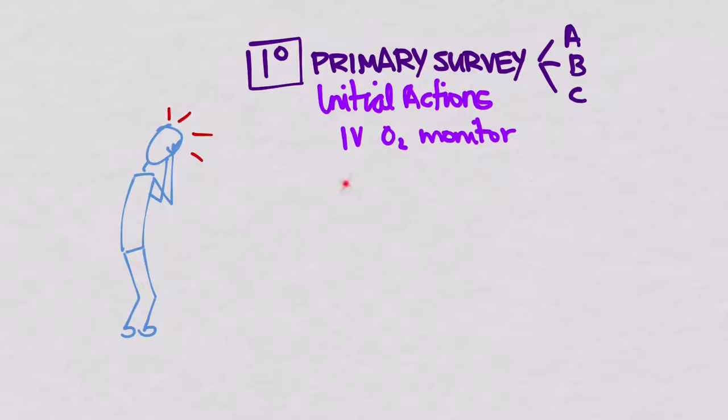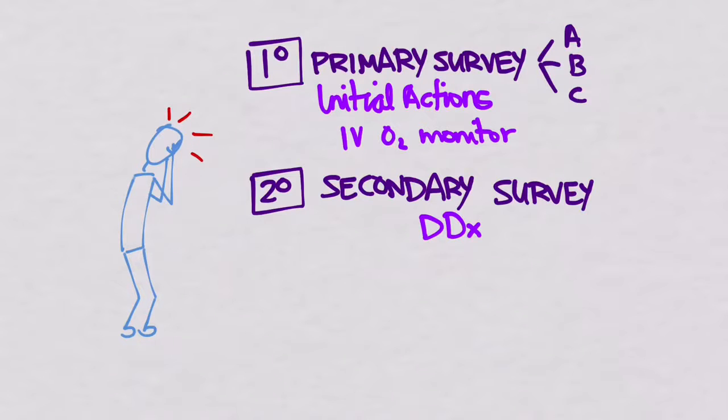And what the primary survey really does, the purpose it serves, is to make sure that your patient is not going to die. Because if they're going to die, it doesn't matter what they have. Stop them from dying. And then, once that's the case, you can move on to the next thing, which will be your secondary survey. How do you do your secondary survey? You need to have your differential diagnosis.